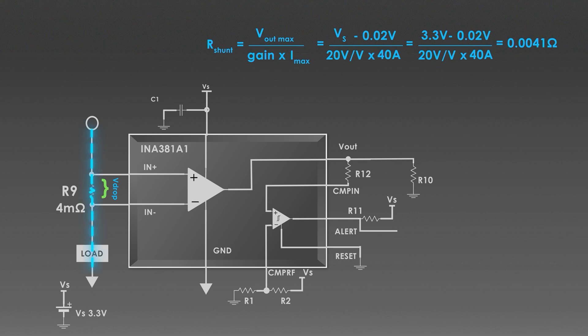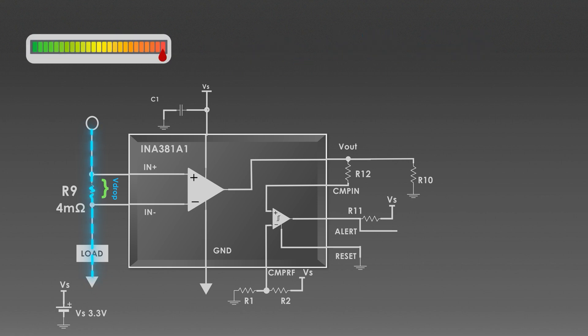The load current flows to the shunt resistor, creating a small voltage drop across it. The voltage across R9 is proportional to the current flowing through it. So, if the current is 35 Amperes, the voltage drop across shunt resistor will be 140 mV.